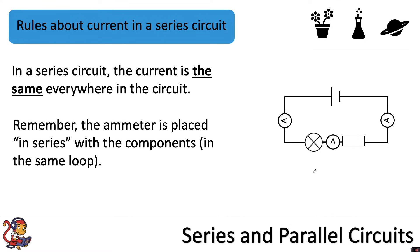In a different circuit with a lamp and a resistor in series, the current may be different in value but the rule is still the same — the current is the same everywhere in the circuit. So if our current was now 1 amp over here, it would also be 1 amp over here and 1 amp over here.